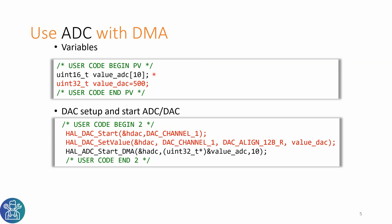In our example we use a buffer size of 10. Anything in red is only optional for the DAC, because I'm using it instead of a signal generator. We'll start with a DAC value of 500.